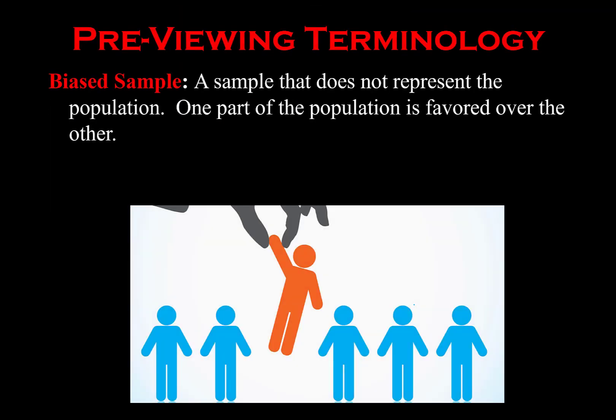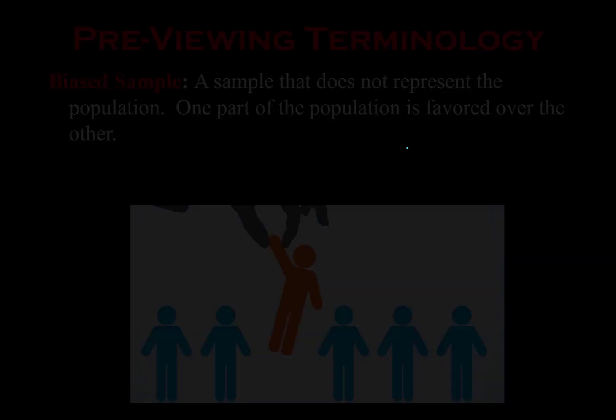A biased sample is what we want to prevent. A biased sample is when subjects are not selected in a random way, and as a result our data is skewed and does not represent the overall population. In a biased sample, someone, some group, or some object is favored over another part of the population.